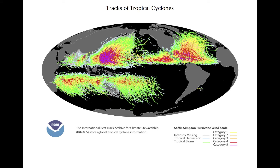One way of categorizing TCs by strength is using the Saffir-Simpson scale, which is based on maximum wind speed of a TC. Orange, pink, and red colors denote the tracks of the strongest TCs when they were most intense. Very strong TCs can happen in any basin where they occur, but they are most common over the warm waters of the West Pacific.